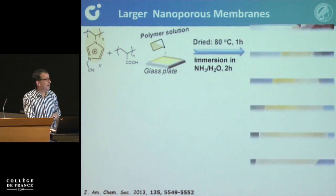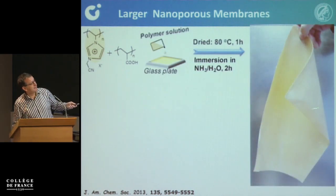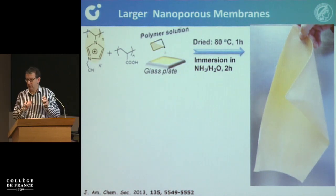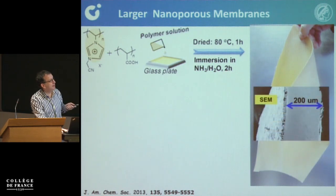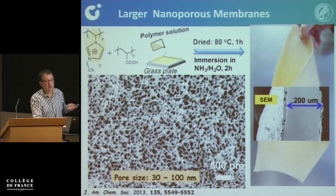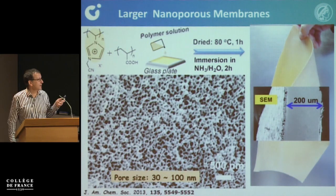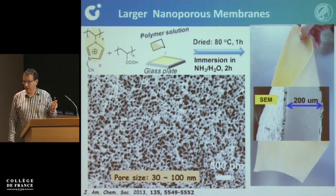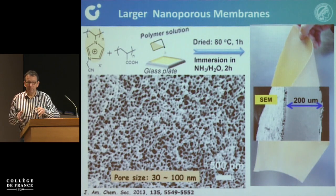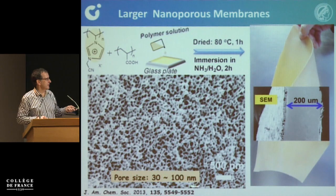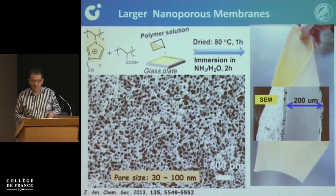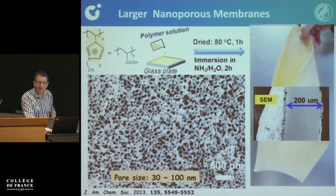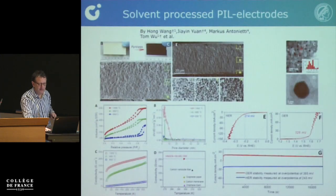Larger nanoporous membranes — here we use polymer processing. You can see this is a hand holding such a membrane made from the precursor. The membrane is a sponge, nanoporous through and through, and I have to tell you — this is carbon. We take the polymer, make the sol-gel transformations, turn the green body into a carbon membrane. Pore size 30 to 100 nanometers, in one big piece — exactly what you need for electrocatalysis, electrolysis, and separation membranes.